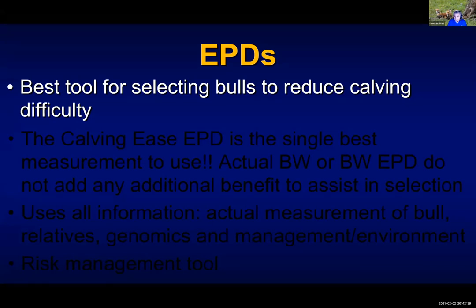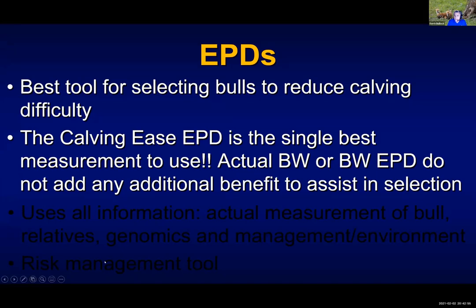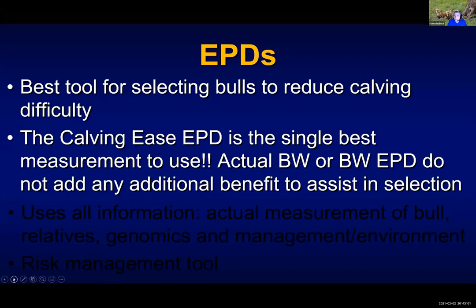Probably as important as anything for calving ease, the calving ease EPD is the single best measurement to use. A lot of people want to still look at the EPD but also weigh in the birth weight and the birth weight EPD. Adding that information does not give you any better estimate than you get with having just the calving ease EPD alone.